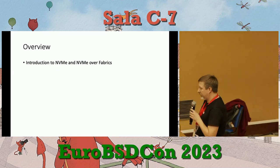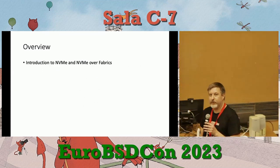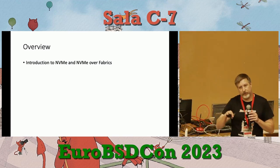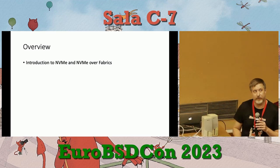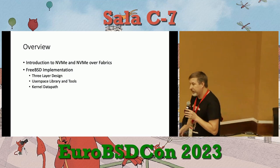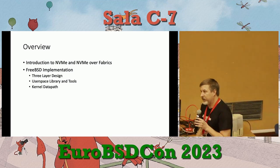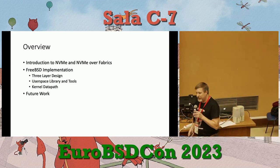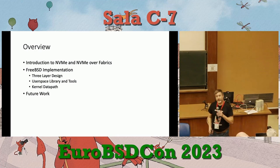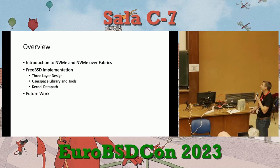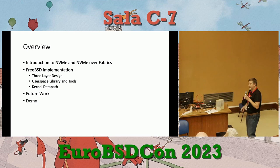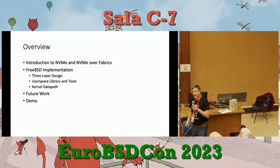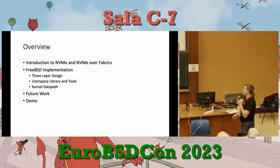I'll start with a brief introduction to NVMe in general, then how NVMe over Fabrics builds on top of that, and what are some of the differences in a Fabrics implementation compared to the PCIe version. Then I'll dig into the implementation I've done so far for FreeBSD. Lastly, I'll talk about future work — the implementation is definitely not complete. And if we magically have time, I have some pre-canned slides showing a demo.